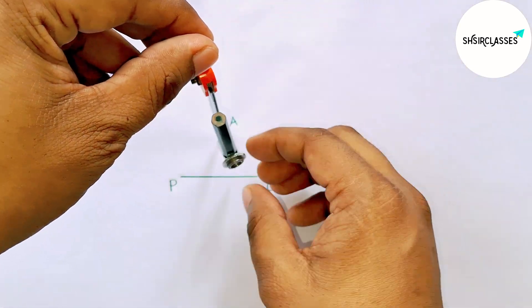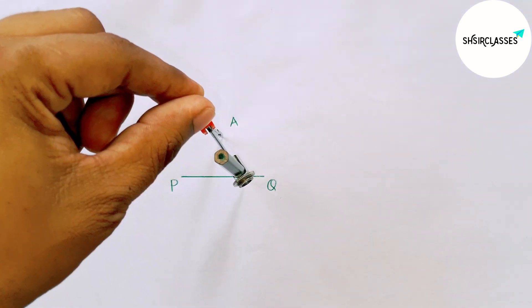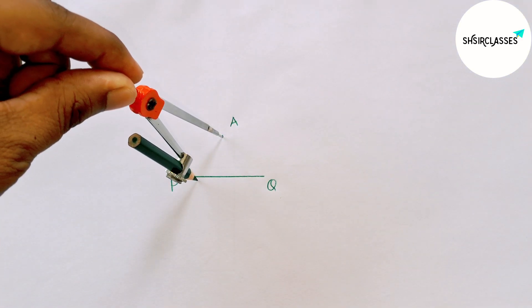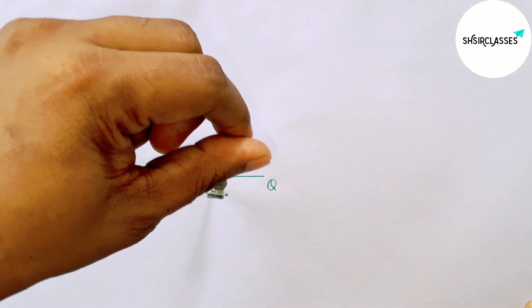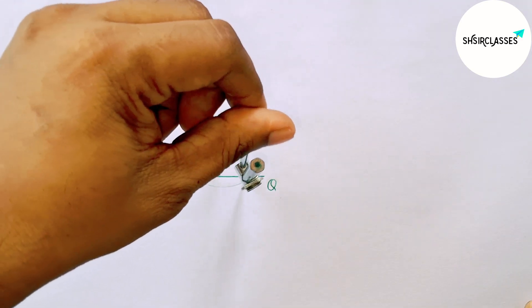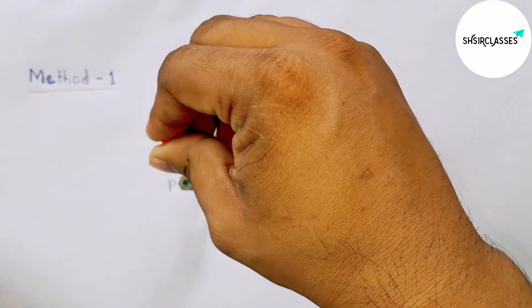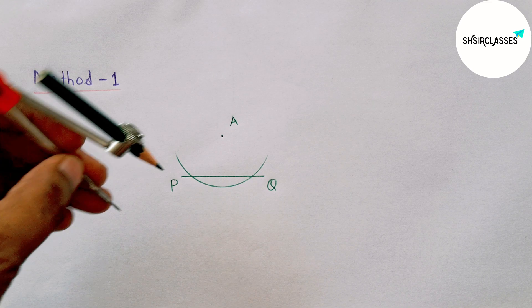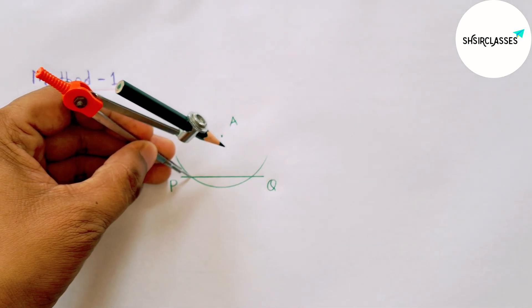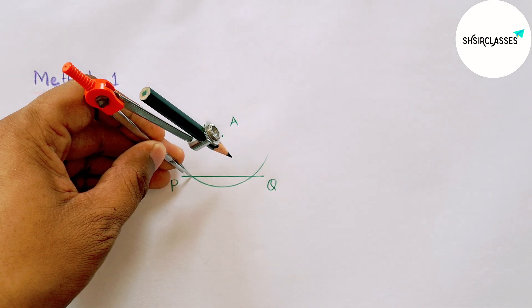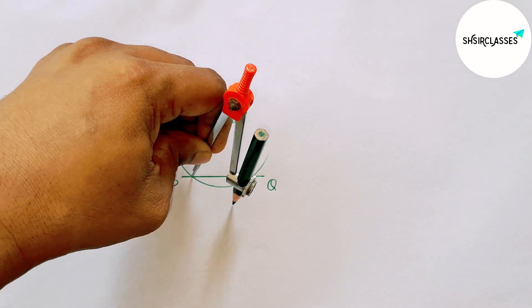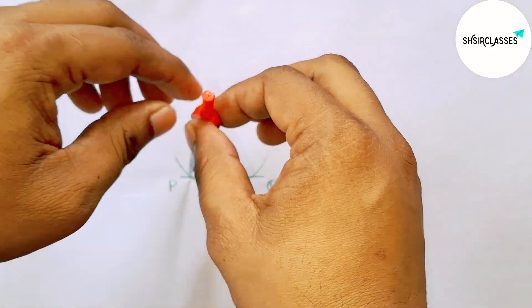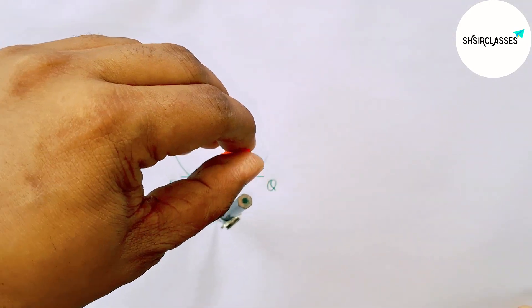Now putting the compass on point A and taking any length, drawing an arc. The arc intersects the line PQ at two points.